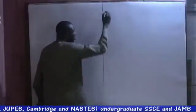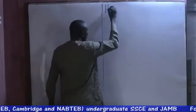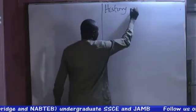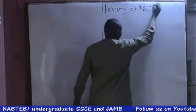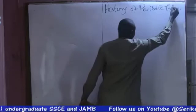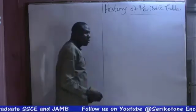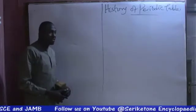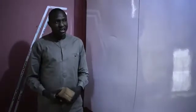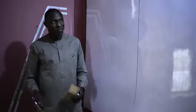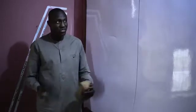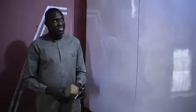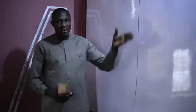Brief history of the periodic table. The long form of the periodic table that you are all familiar with comes a long way before we can arrive at what we have — the arrangement of elements both in groups and in periods. And it can be dated back to over 200 years ago.